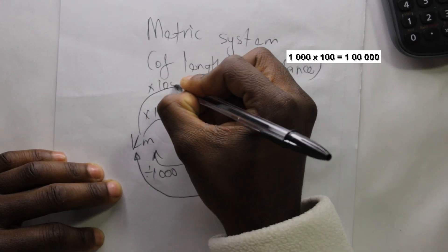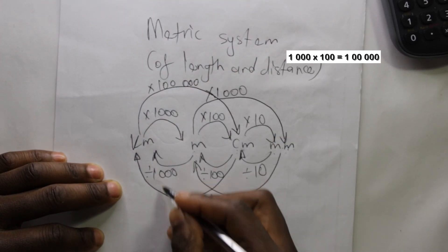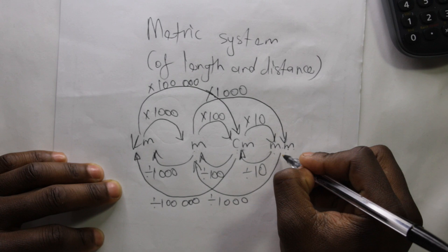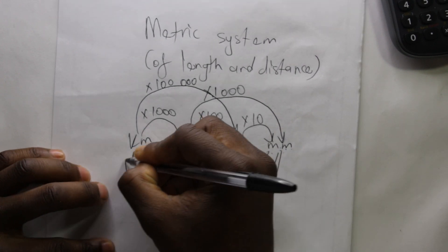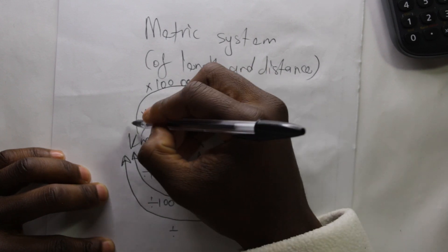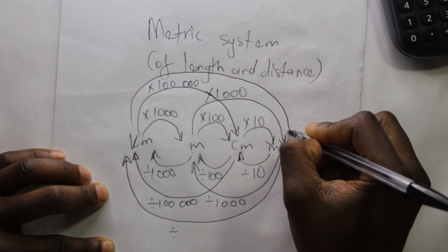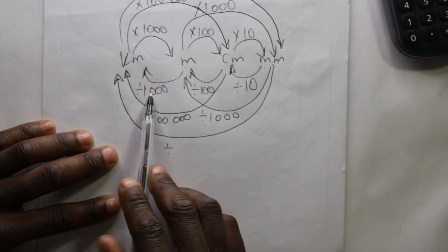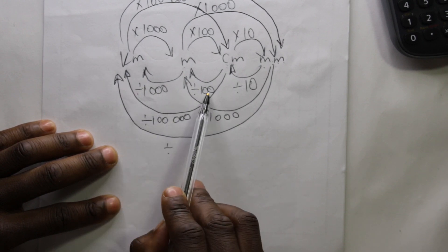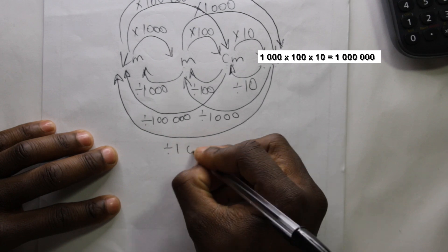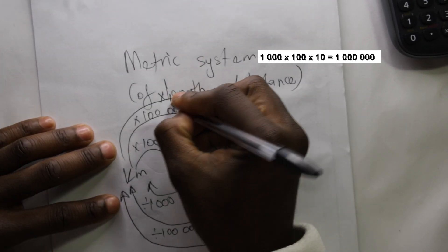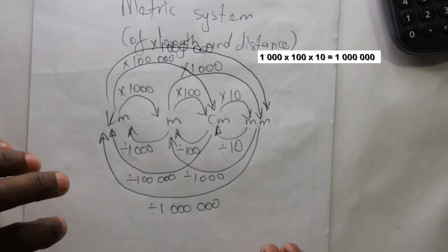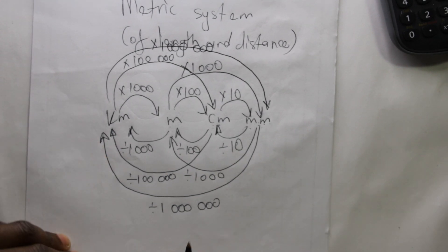You will get one hundred thousand. On the divide side, divide by one hundred thousand. From millimeters straight to kilometers we divide; from kilometers straight to millimeters on a calculator you say one thousand times one hundred times ten, giving you one million. And dividing that side gives you one million. That's the metric system for length and distance.